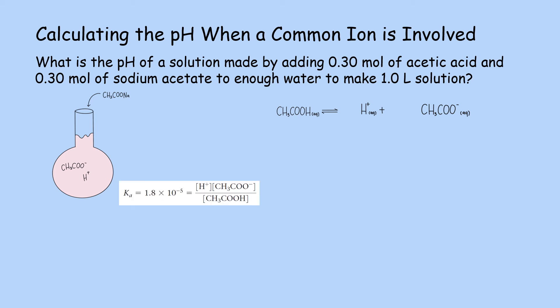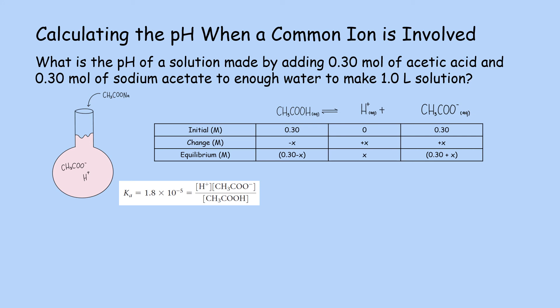This will be followed by the equilibrium constant expression for this reaction, and then we will be setting up what we call the ICE table, which stands for Initial Change and Equilibrium Concentrations. In setting up the ICE table, make sure that the columns will be in line with the reactants and the products.